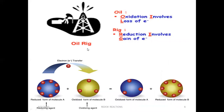OIL RIG is a technique by which you can remember that oxidation involves loss of electrons and reduction involves gain of electrons. Here, we can understand how electron transfer leads to oxidation or reduction. This is molecule A with seven electrons and molecule B with three electrons. When they react, electrons from A are transferred to B. A loses electrons — this is oxidation — and B gains electrons — this is reduction.